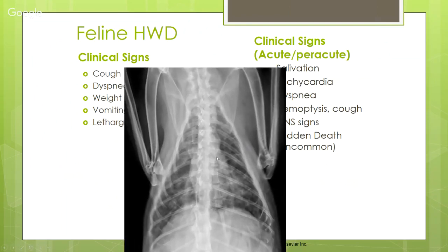Here is an x-ray of a cat with heartworm disease — note the spine position relative to the sternum indicates the cat is twisted, which can affect how the heart shape appears. What we see is heavy pulmonary infiltrates — very busy lungs that should look black instead. This is a key radiographic finding in feline heartworm disease.